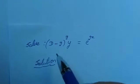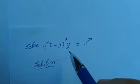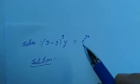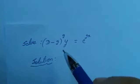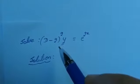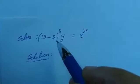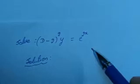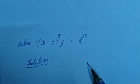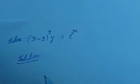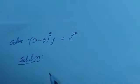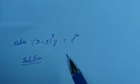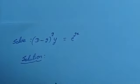In this video, we are going to see how to solve the ordinary differential equation with constant coefficients. Here we have to solve (D minus 2) whole square into y equals e raised to 2x. To solve this ordinary differential equation, we have to find the complementary function and particular integral.